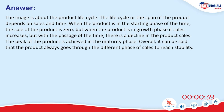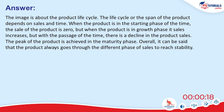The image is about the product life cycle. The life cycle of the product depends on sales and time. When the product is in the starting phase, the sale is zero. But when in the growth phase, sales increase. With the passage of time there is a decline in product sales. The peak of the product is achieved in the maturity phase. Overall, the product always goes through different phases of sales to reach stability.